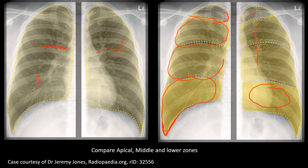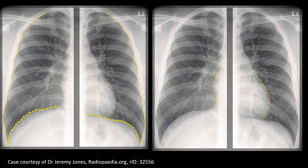Similarly, look for the costophrenic angle and cardiophrenic angle — both should be properly visible. Identify the border of the thoracic cage making an angle with the diaphragm: this is the costophrenic angle. Similarly, this is the cardiophrenic angle. The right and left borders of the mediastinum should be properly identified.